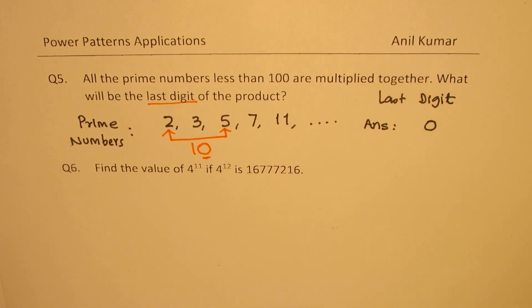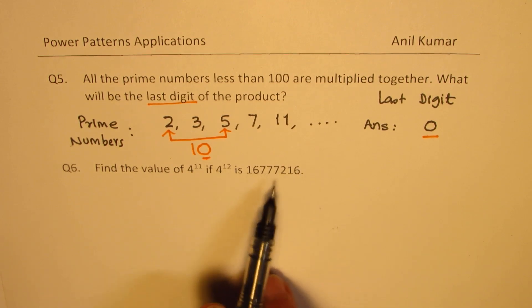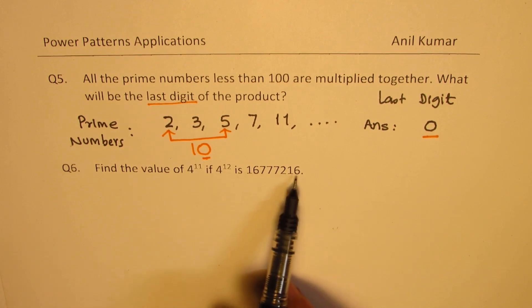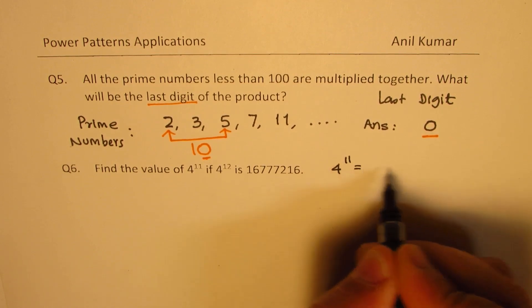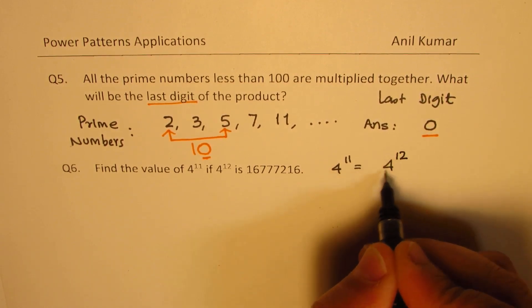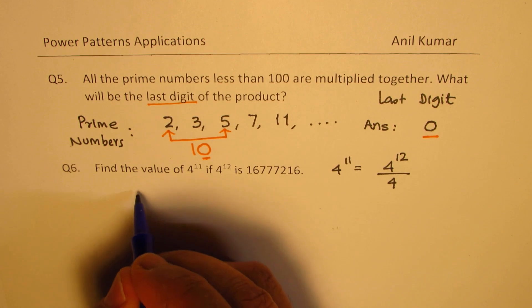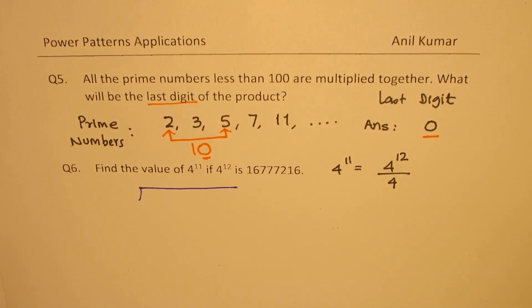So that is how we are going to answer question number six, find the value of 4 to the power of 11, if 4 to the power of 12 is this big number. So to get 4 to the power of 11, what should we do? We should divide this by 4. We know that 4 to the power of 11 is 4 to the power of 12 divided by 4. That is what we need. So let's divide this big number by 4. So we have this division. I will perform a long division to get the answer.